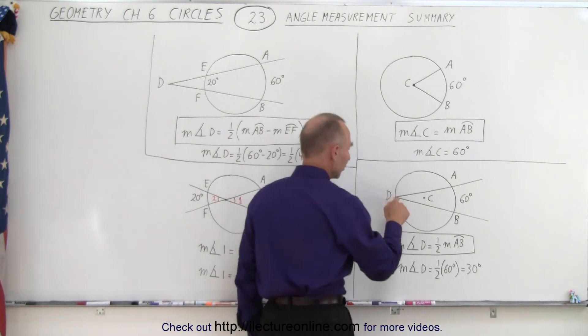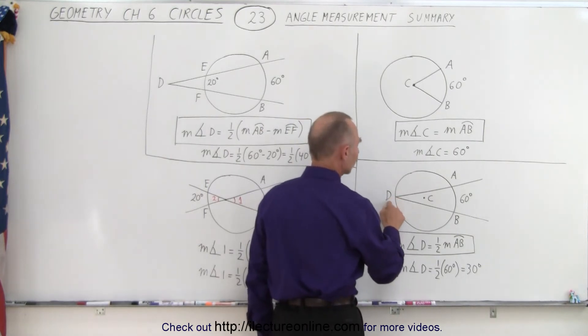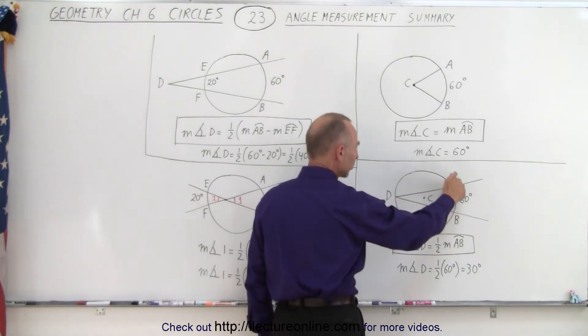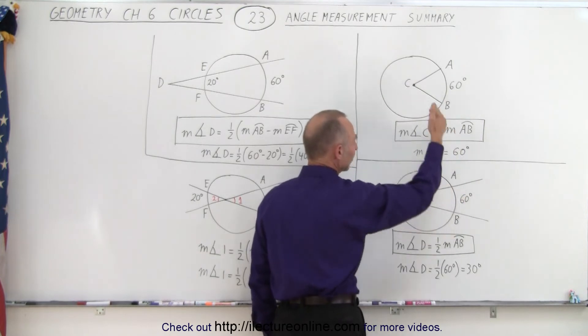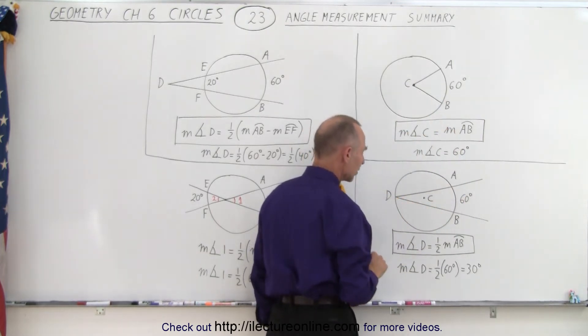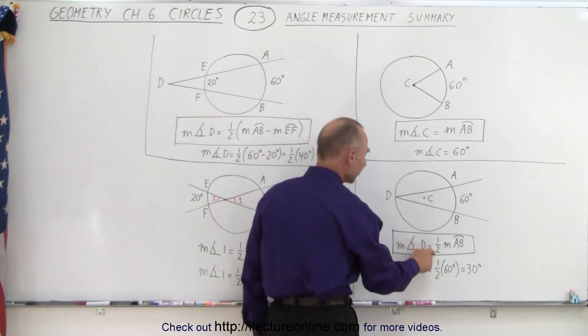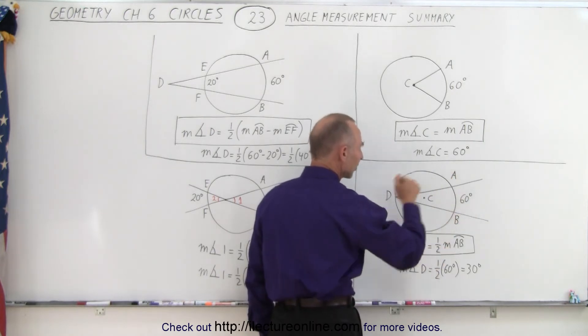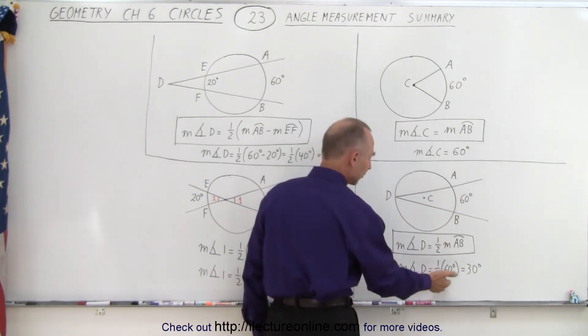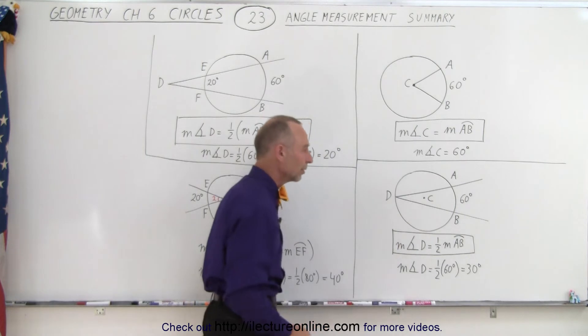And if we put the point of the angle at the edge of the circle, and here we have the intersected arc, notice that the size is the same, but now we put the point over here, then the measure of the angle is half the measure of the arc that's intersected. And so therefore, half of 60 degrees is 30 degrees.